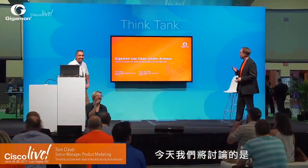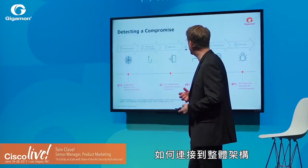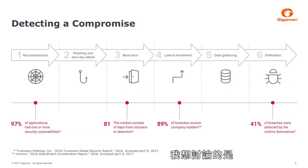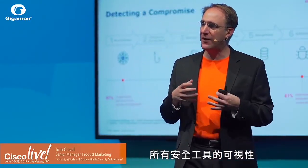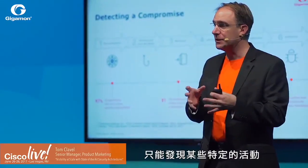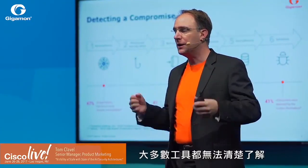Thanks a lot for being here today. What we're going to discuss is how at Gigamon we're trying to improve security with our security delivery platform. First, what I want to discuss is detecting a compromise. It is very hard to detect a compromise — it requires detecting a series of activities that happen over a certain period of time. All security tools only have visibility over a certain set of those activities, and most are not able to see and comprehend the overall kill chain.